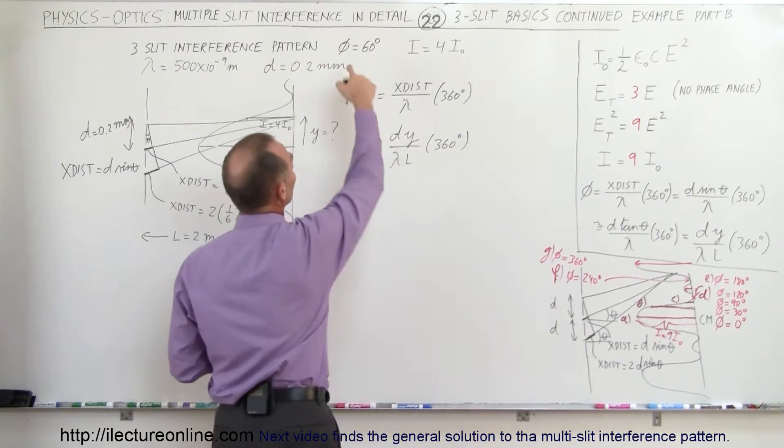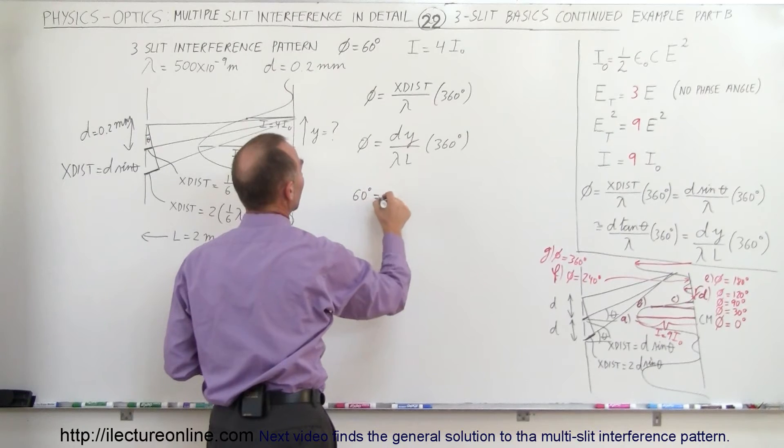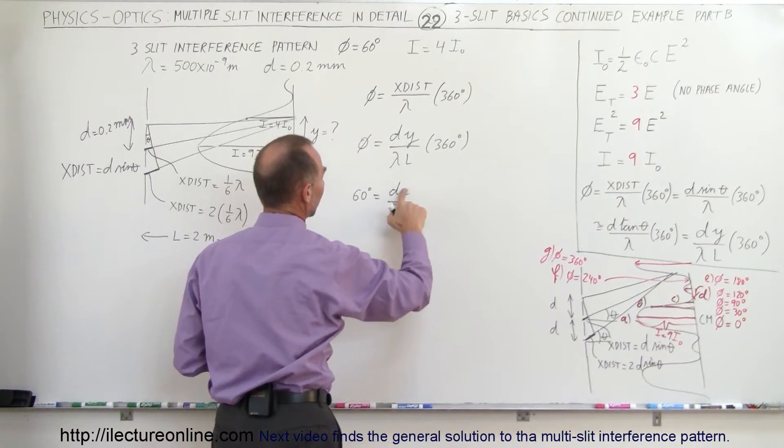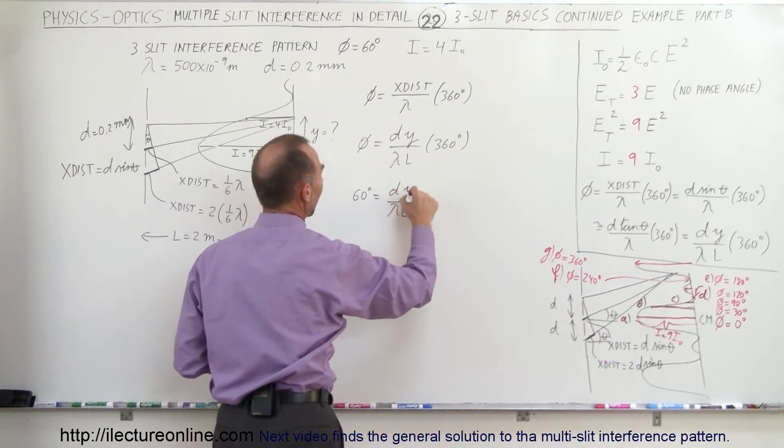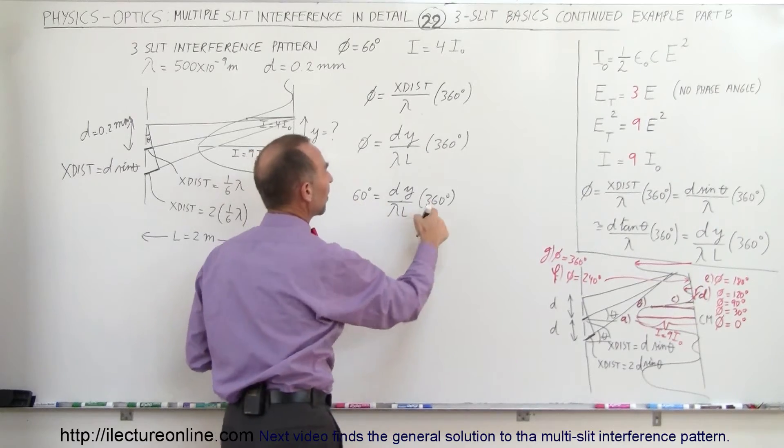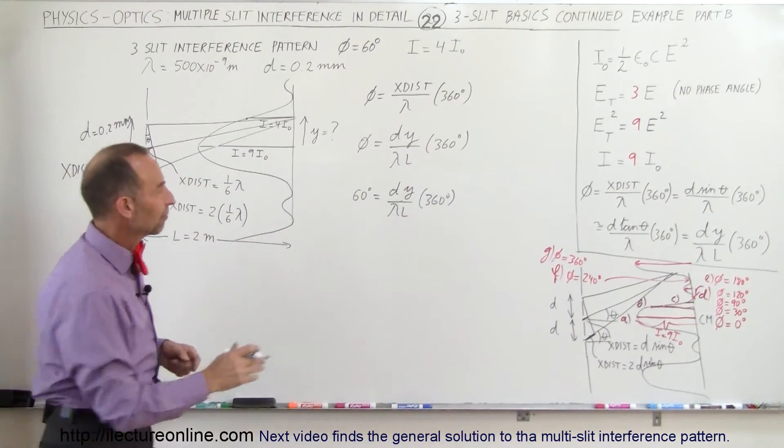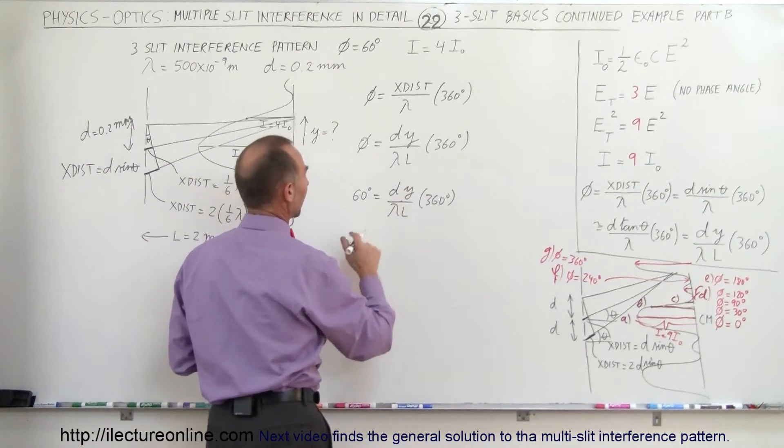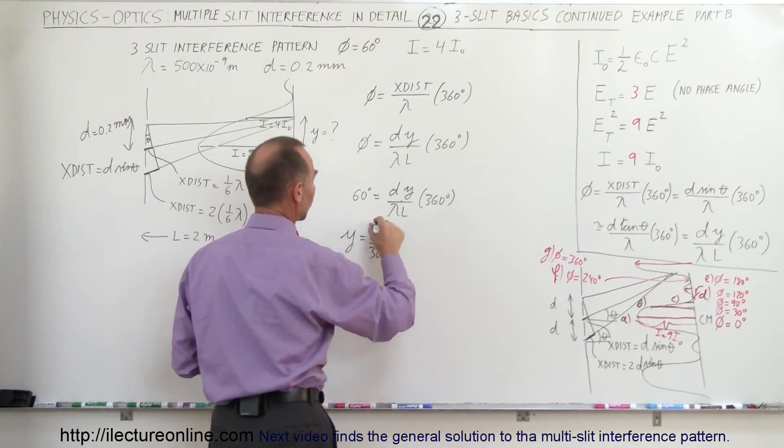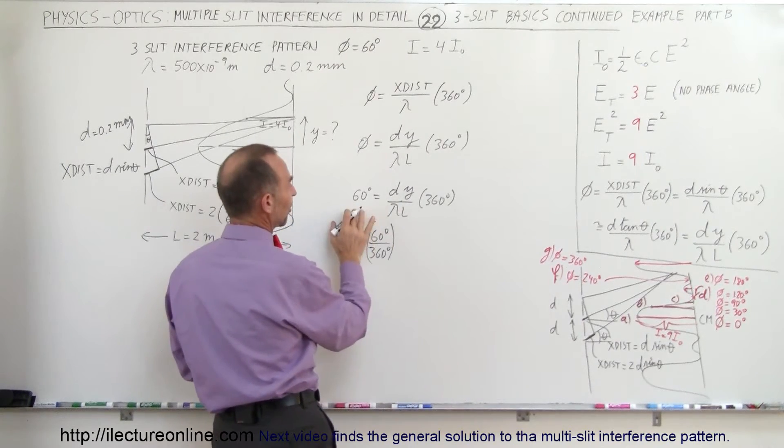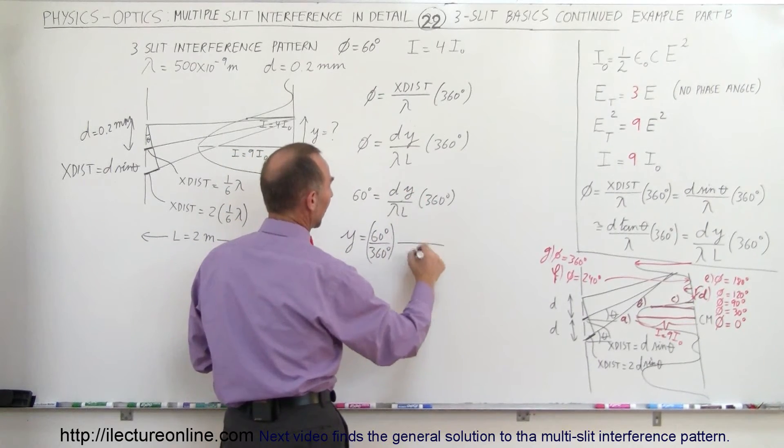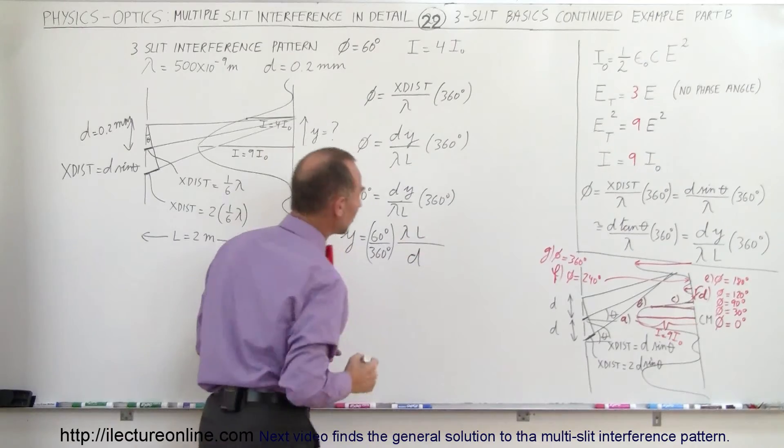And since the phase difference in this case is 60 degrees, we can say 60 degrees equals d times y times 360 degrees over lambda L, and we're solving for y. We can then say that y is equal to 60 degrees divided by 360 degrees, which is 1 sixth. So I flip the equation around, then I can put d on the denominator, and lambda and L on the numerator.